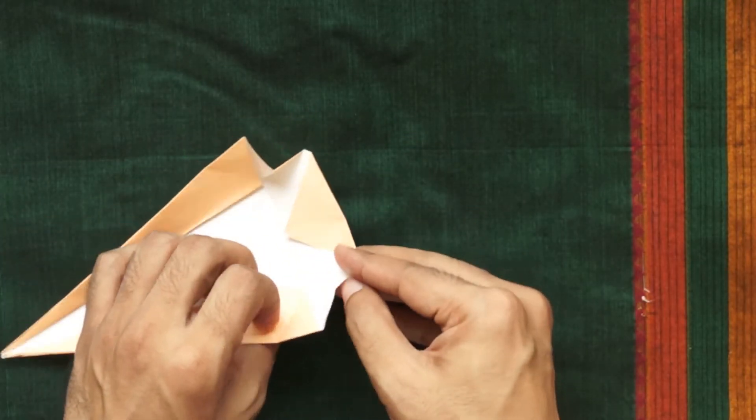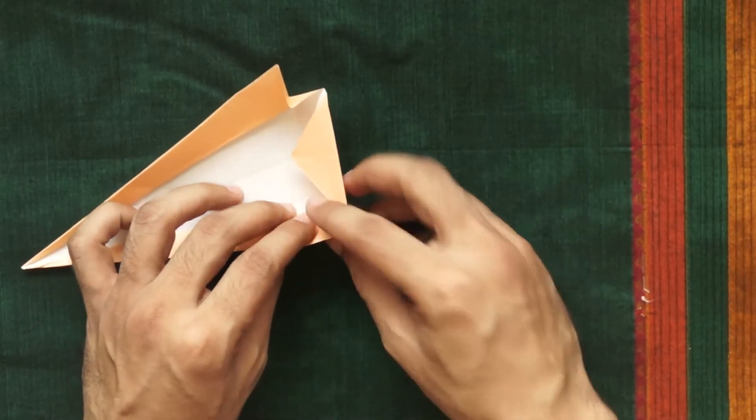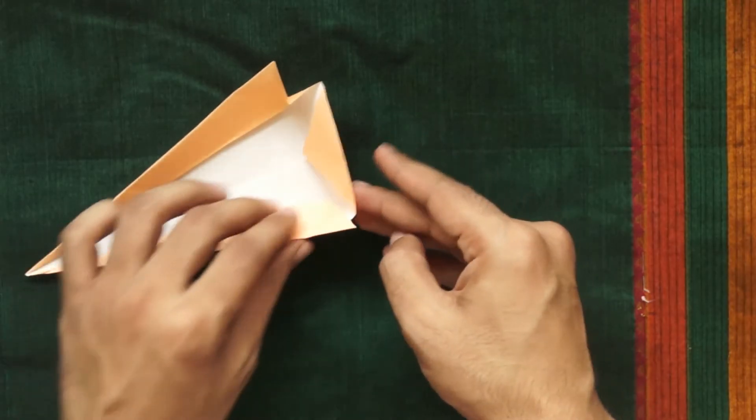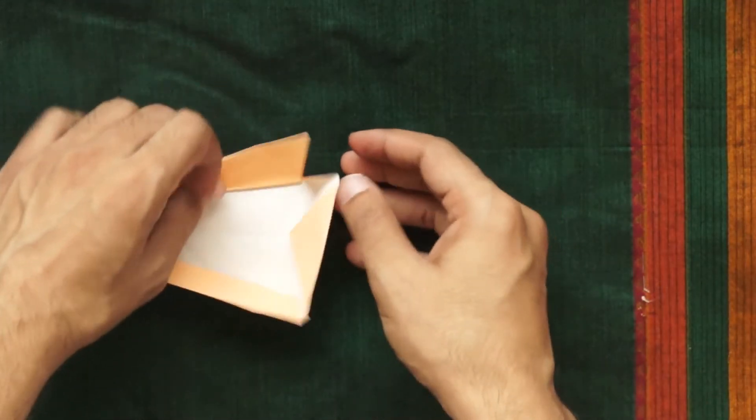To strengthen the structure and form the three-dimensional shape of the diya, tuck the triangular corner flaps under the side wall flaps and fold them down to form a clean box-like corner. Do this on both sides.